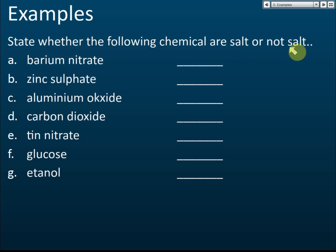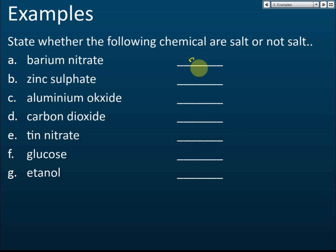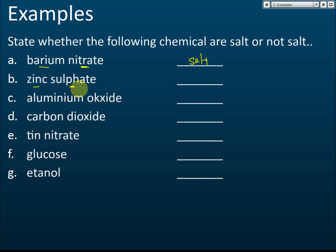Now let's determine whether the following are salts or not. Barium nitrate — it is a salt, because barium is a metal ion and nitrate comes from nitric acid. Zinc sulfate — it is also a salt, because sulfate comes from sulfuric acid and zinc is a positive metal ion.